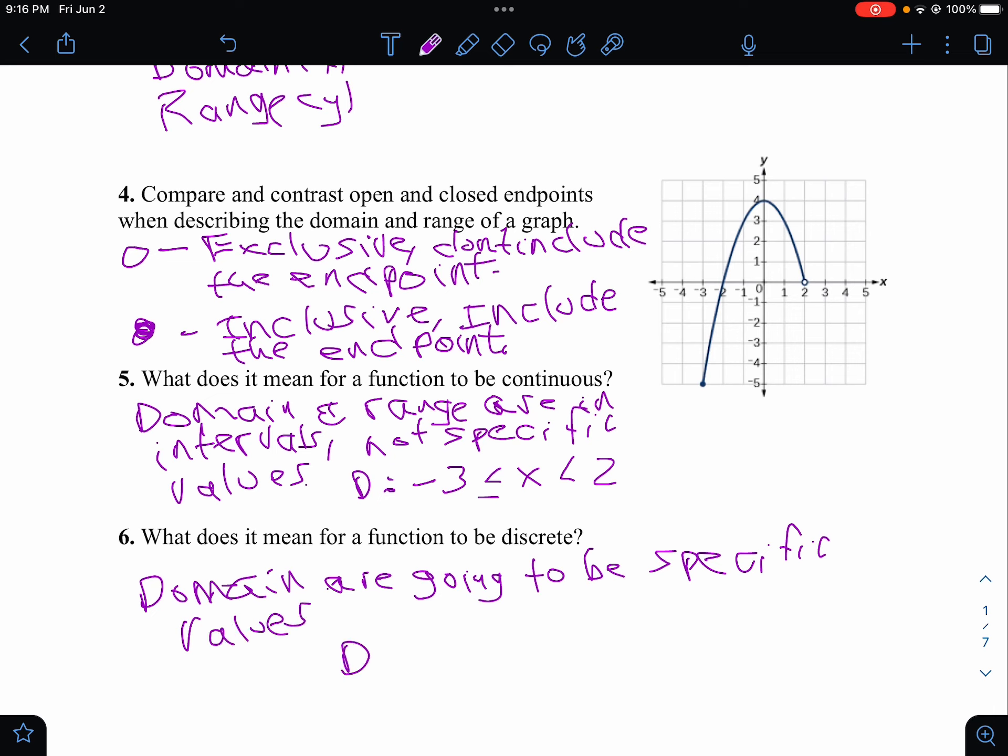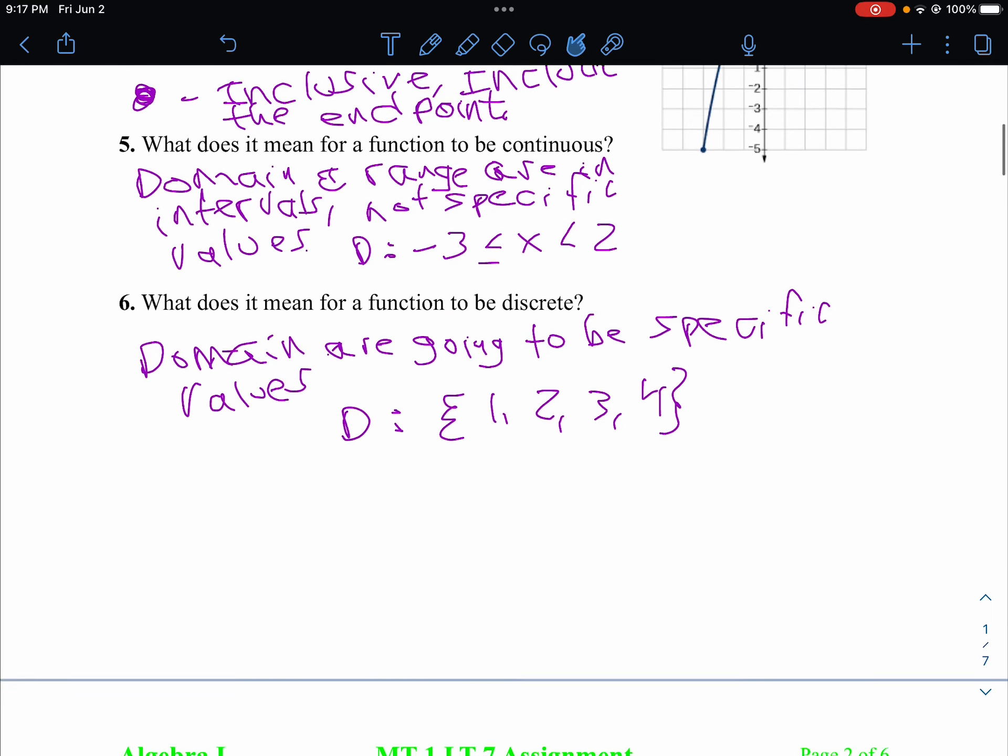An example would be your domain would be the set like one, two, three, and four. Only those values, no other values, nothing in between those values.